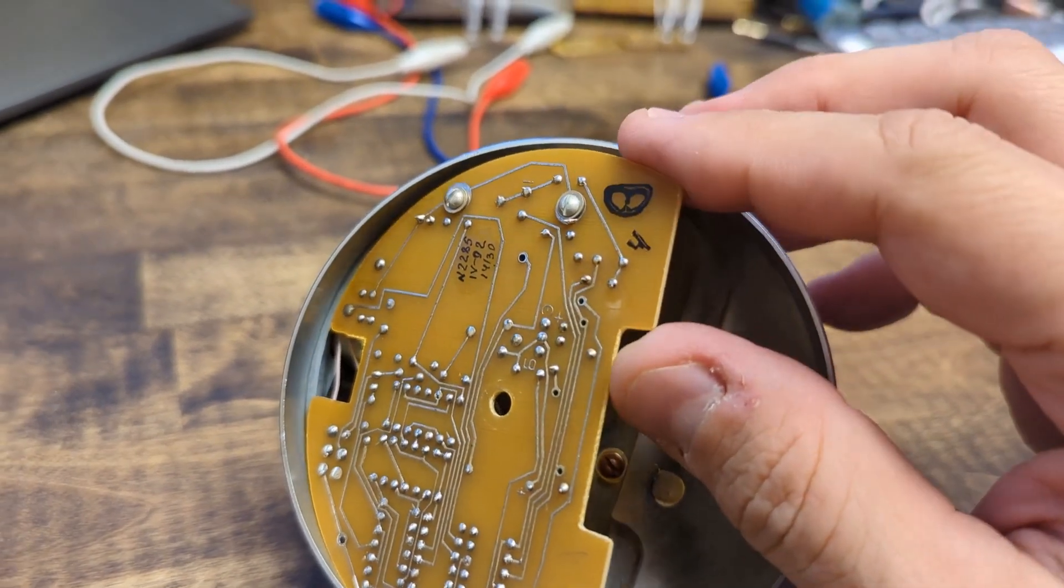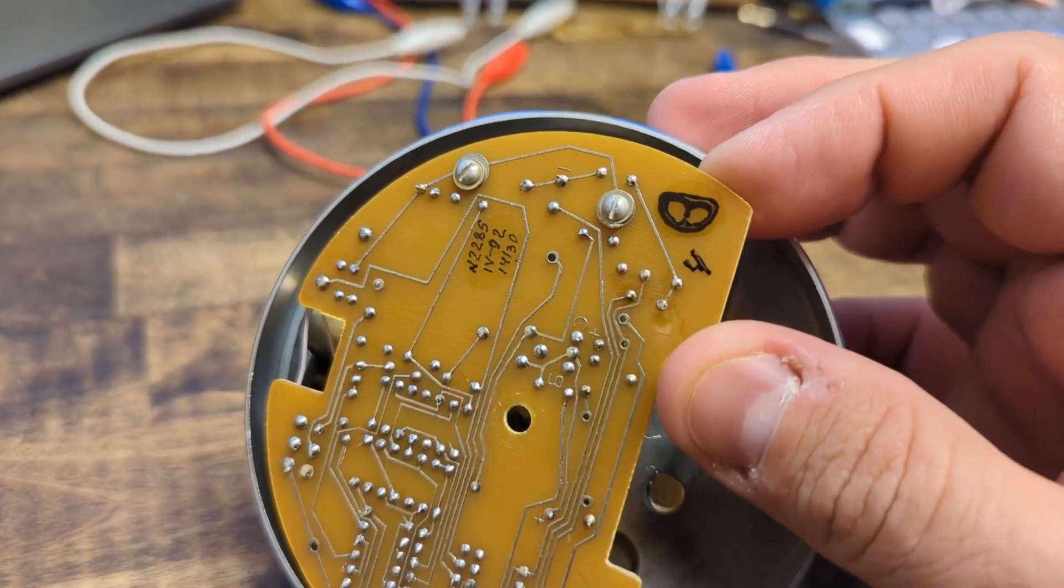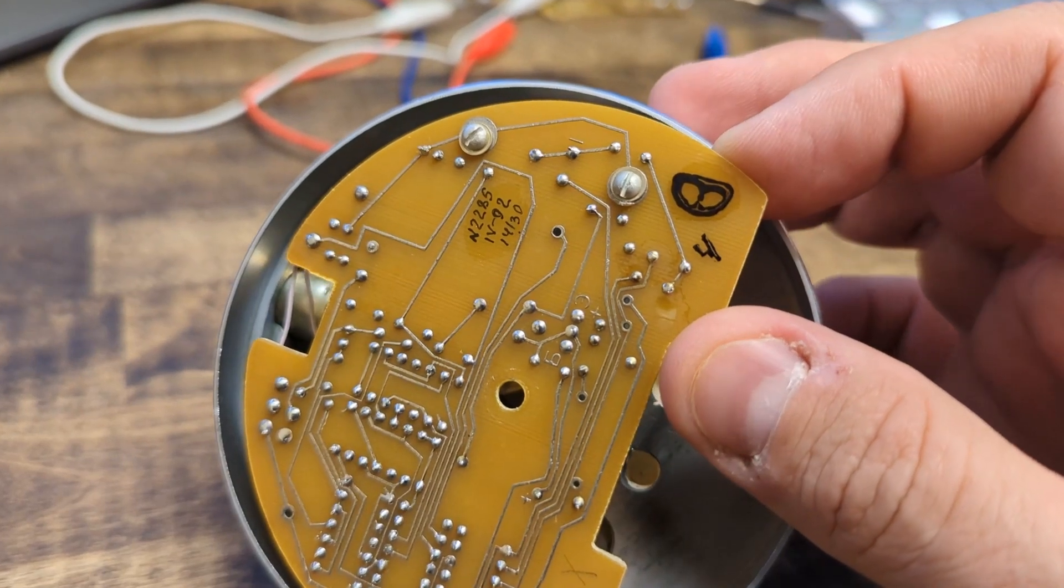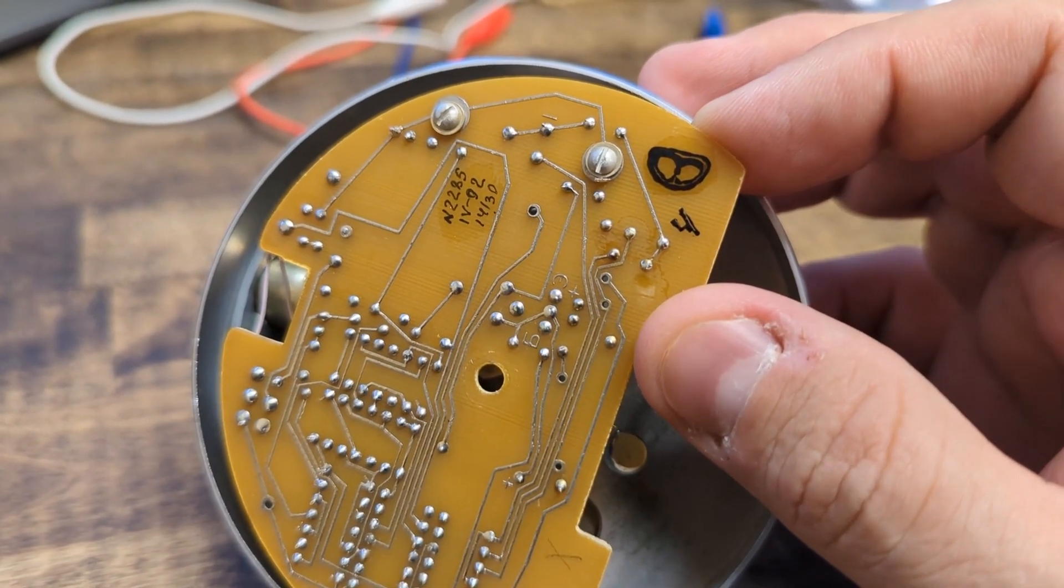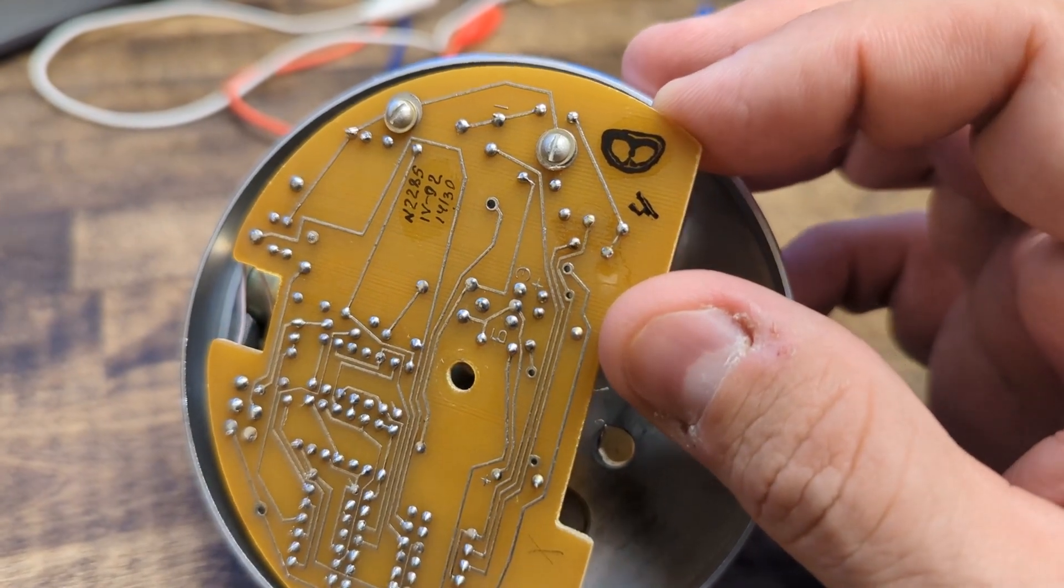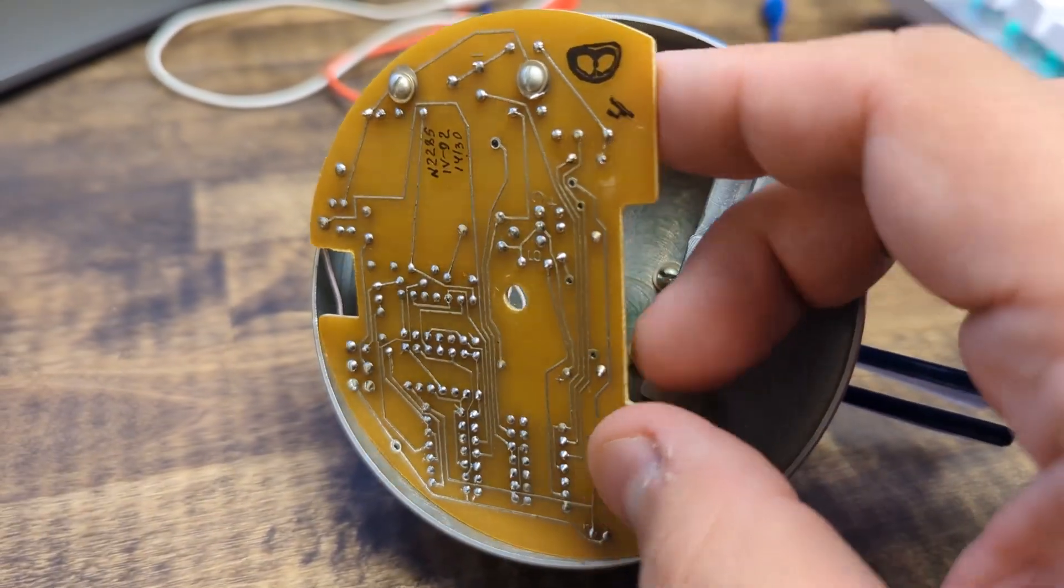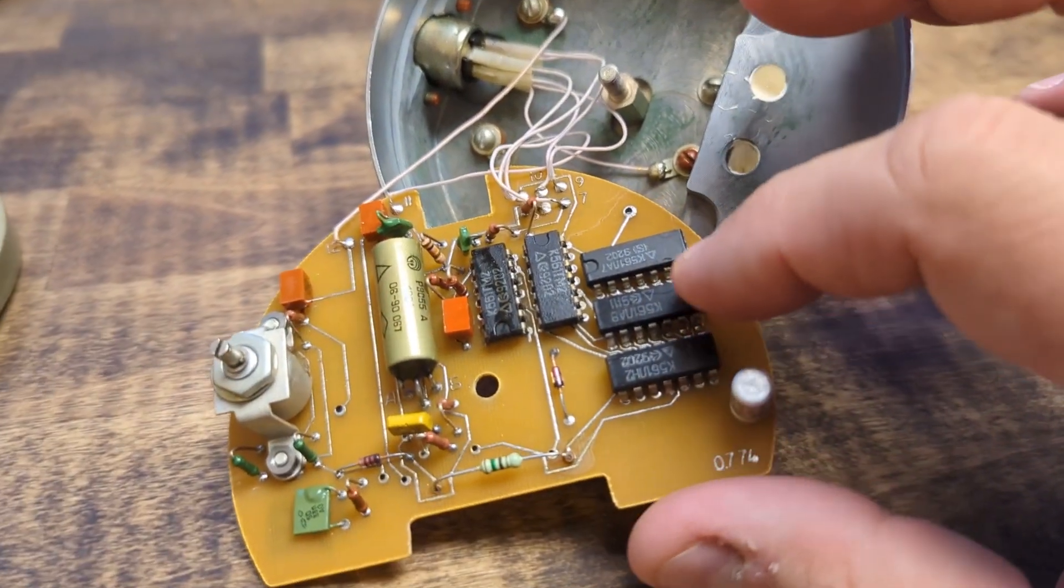Now this circuit board, let's see, this is a 2285. So yeah, it looks like it's maybe 1992. I'm guessing that's what that means. Maybe April of 1992. But the circuit board is, this is actually a KEYR.